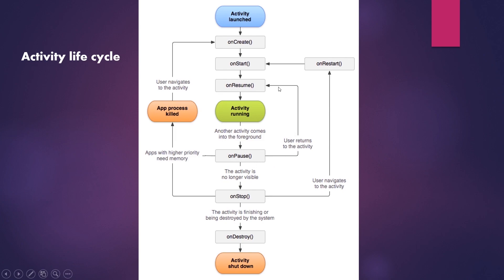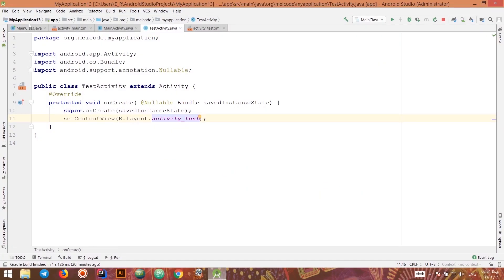There are other situations as well — for example, when the application loses the user's focus due to a notification. In that situation, the activity goes through onPause, and when the user comes back it goes through onResume. In a real application you need to handle these situations — for example, opening and closing files, or connecting and disconnecting from the internet.